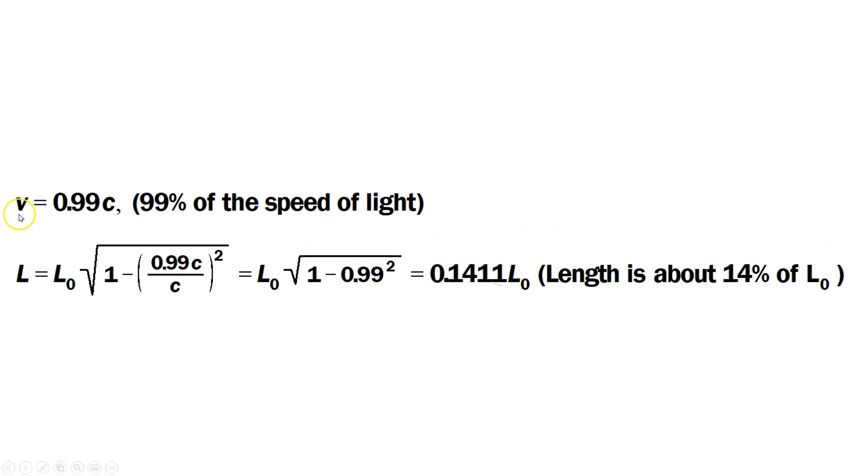Another example. Imagine v is 0.99c, that's 99% the speed of light. You do a similar calculation. L equals L₀ times the square root of 1 minus (0.99c/c)². Notice the way I express v is as a fraction or decimal, some kind of multiplier of c. So 0.99c, the c's cancel, then you have L₀ times the square root of 1 minus 0.99². Working this out you get 0.14 times L₀, so the length is about 14% of L₀. If it's a meter stick, that's 100 centimeters, then it would be only 14 centimeters.